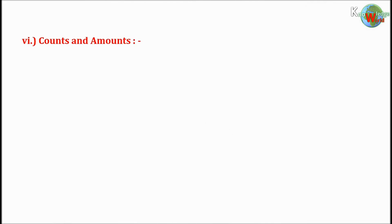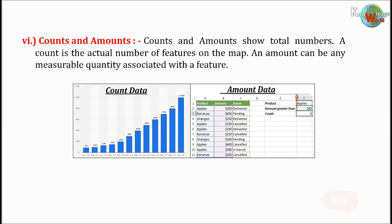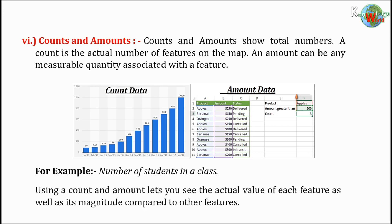Counts and amounts show total numbers. A count is the actual number of features on the map. An amount can be any measurable quantity associated with a feature. For example, the number of students in a class. Using counts and amounts lets you see the actual value of each feature as well as its magnitude compared to other features.